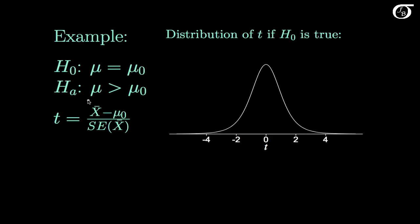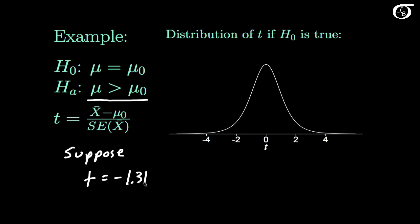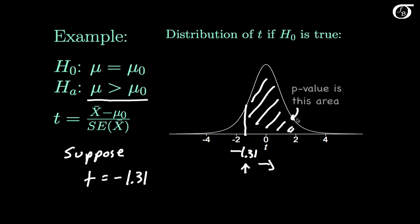If our alternative hypothesis is that mu is greater than mu0, then values in the right tail give us evidence against the null in favor of that alternative. Suppose we got the same test statistic of minus 1.31. Values in the right tail give evidence against the null hypothesis, so the p-value is the probability under the null hypothesis of getting this value or something even farther to the right — the area under the curve to the right of our test statistic.